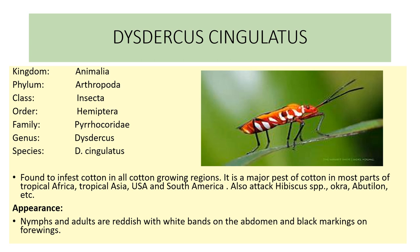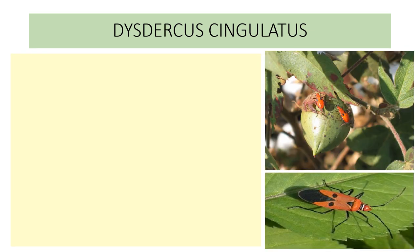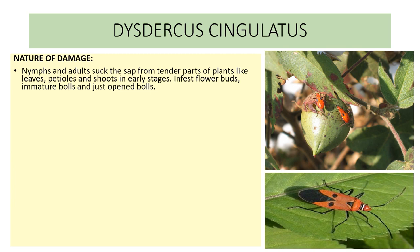Nymphs and adults are reddish with a white band on the abdomen and black markings on the forewings. Nature of damage: nymphs and adults suck the sap from tender parts of plants like leaves, petioles, and shoots in early stages, and infest flower buds, immature bolls, and just-open bolls.